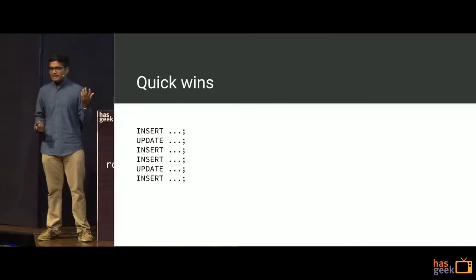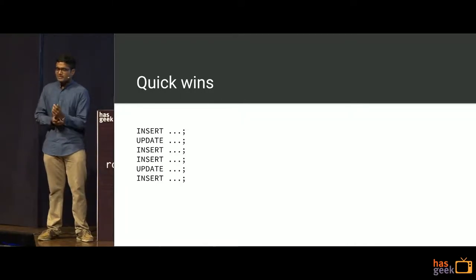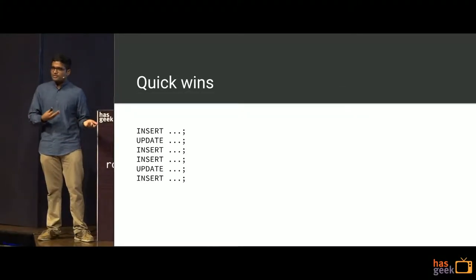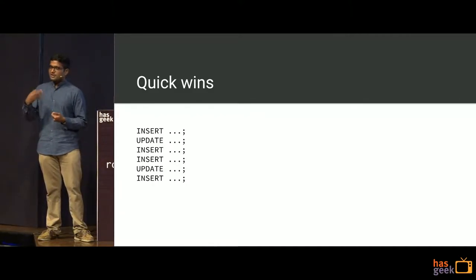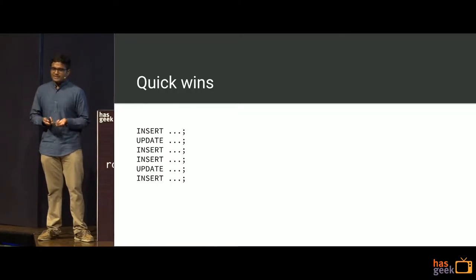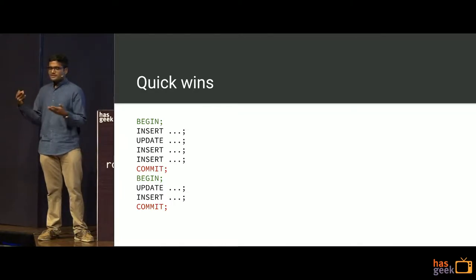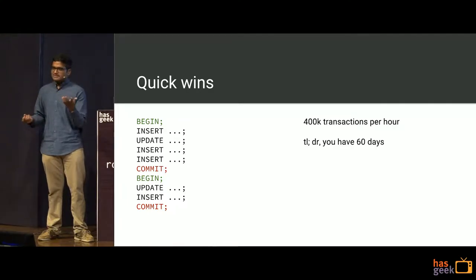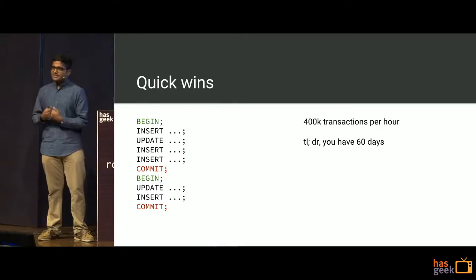We decided to look at the quick wins. We had a summary of what our different applications were doing: insert, update, insert, insert, update — that's six transactions, and those six were contributing six individual transaction IDs. So the first thing we decided was, where the business logic allows, start grouping them together. By wrapping them in BEGIN and COMMIT you isolate the transactions into batches. This gave us another 20 days, so about 60 days total to work around all of this.